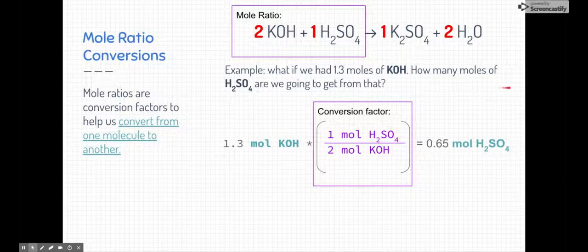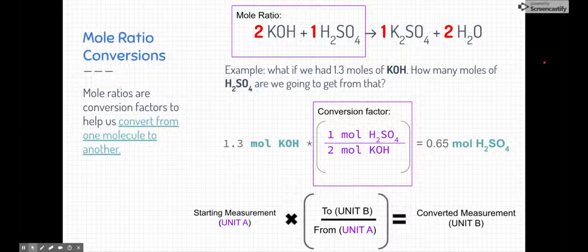If you recall when we talked about conversion factors before, we've done this before when we talked about mole ratios or when we talked about Avogadro's number and converting between grams and moles. Here's the generalized form of using a conversion factor. We always take our starting measurement of unit A, that's what's given to us in the problem. In order to convert it to unit B, we're going to multiply it by that conversion factor, making sure that we put the ratio or the conversion of the from unit on the bottom, and if we're going to unit B, we want to put it on the top. Then we're going to end up with our converted measurement.